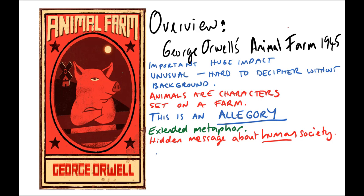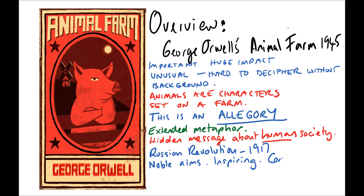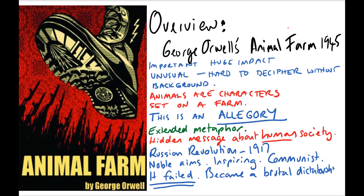In particular, Animal Farm is meant to represent George Orwell's views on what happened in the Russian Revolution of 1917 — the communist revolution that overthrew the Tsar of Russia, a brutal dictator. Originally it was a revolution that inspired a lot of people, with very noble aims to remake that society in a more equal way. But George Orwell was of the view that over time, the aims of that revolution were lost, and the country itself ended up becoming a brutal dictatorship in another form.